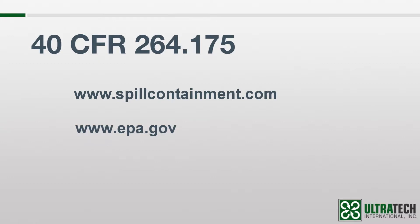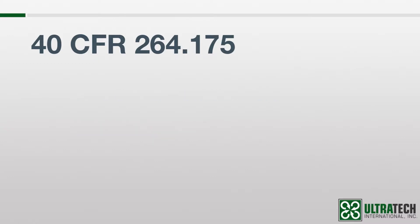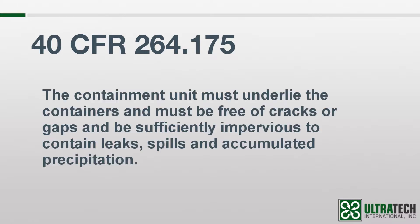The regulation states three requirements for spill containment systems. The first one is: the containment unit must underlie the containers and must be free of cracks or gaps, and be sufficiently impervious to contain leaks, spills, and accumulated precipitation. Pretty straightforward — it doesn't make a whole lot of sense to contain a spill with something that is going to leak or spill itself.